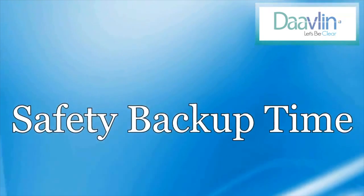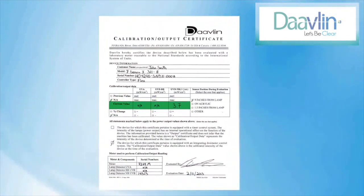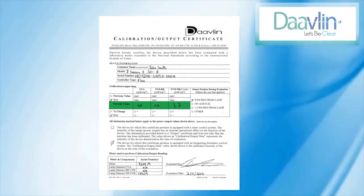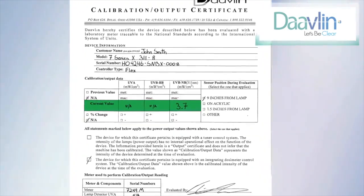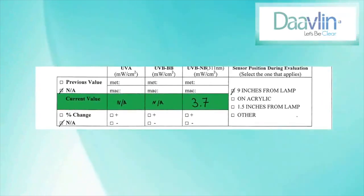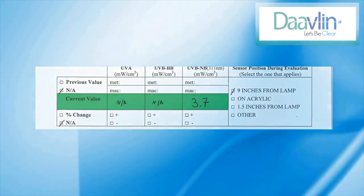Once you have received your doctor's dosing instructions, you will need to calculate your safety backup time. To calculate a backup time, you will first need to know the power output of your unit. The power output will be located on the calibration output certificate under the current value section. In this example, the narrowband UVB power output is 3.7 milliwatts per square centimeter.